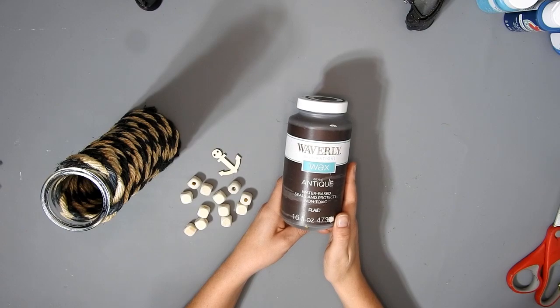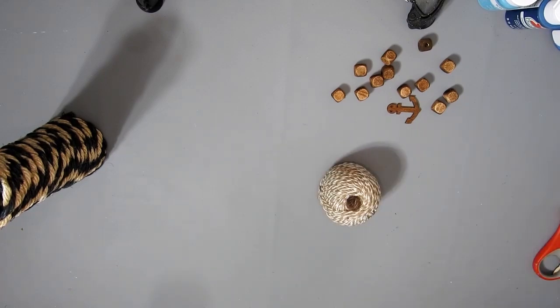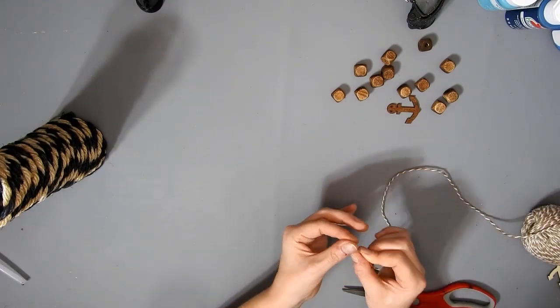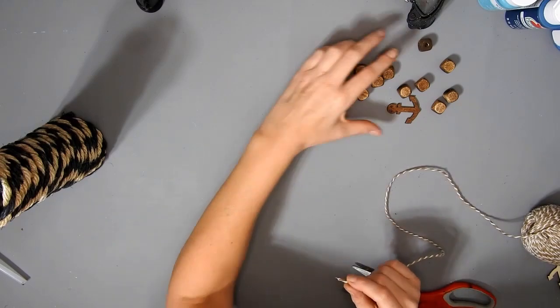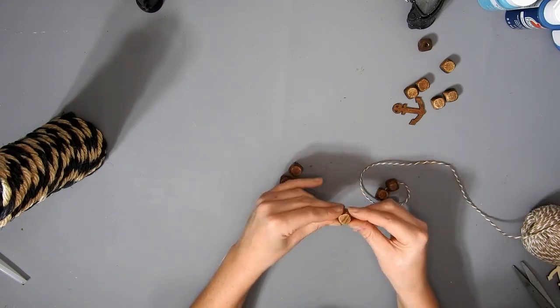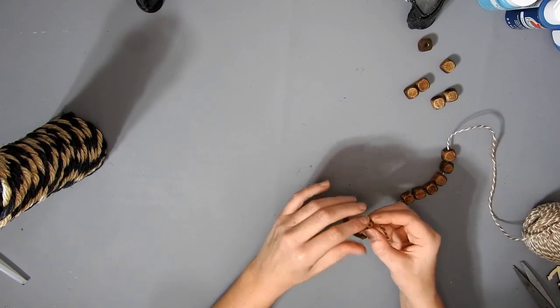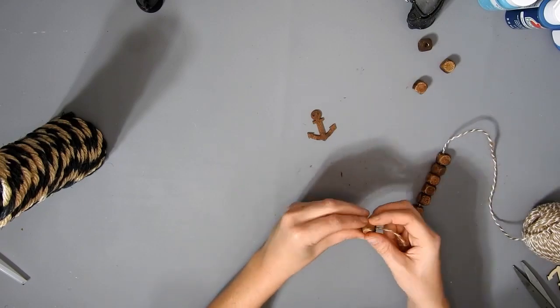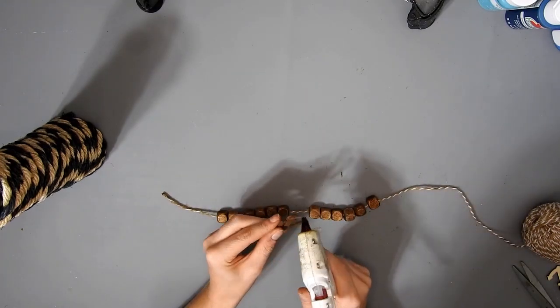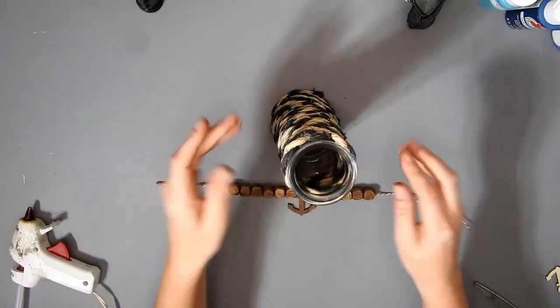I stained it with the Waverly Antique Wax, and then I found this twine that's twine and it's got some white in it as well. I'm just hot glue on the end, and then I'm gonna thread the beads on. These have a big hole in them which is good. They go on easy. Then I just split it in half and glued the little anchor on underneath the twine so it covers up the wee holes at the top.